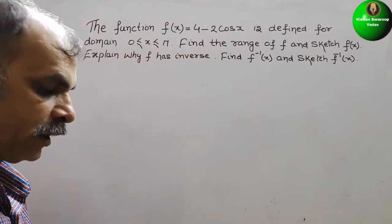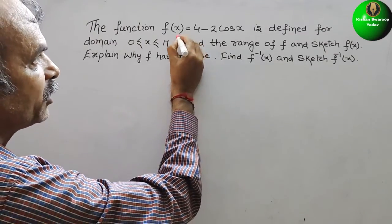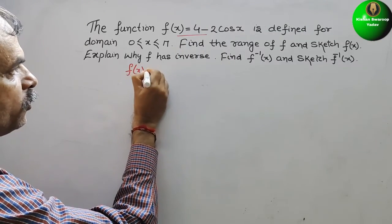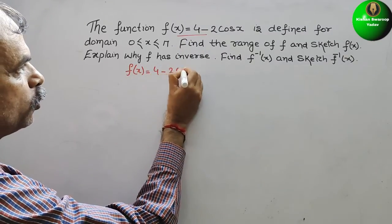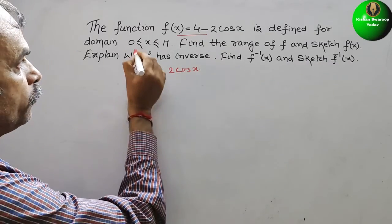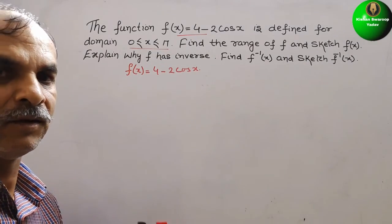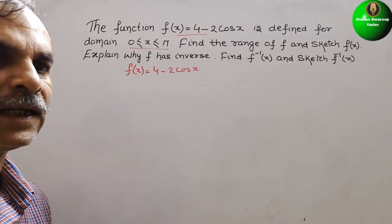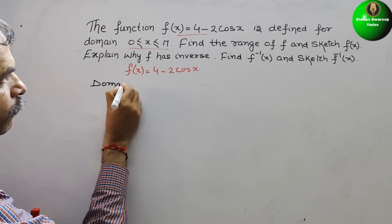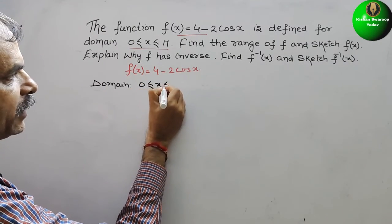Now, what they have told, we have to do that only. Here, f(x) is equal to 4 minus 2cos(x). They have given the domain also. The domain is 0 ≤ x ≤ π.